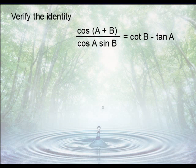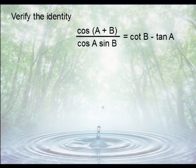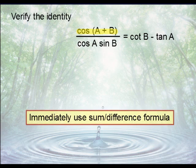Let's try to prove that the cosine of A plus B, which is the sum of two different angles, over the cosine of A times the sine of B is equal to the cotangent of B minus the tangent of A. The first thing you should notice is that this cosine here has two different angles, but we don't see this in any other location. If that's the case, you will want to immediately substitute in the sum formula for it.